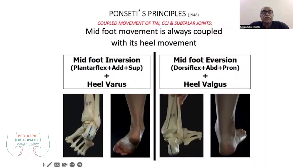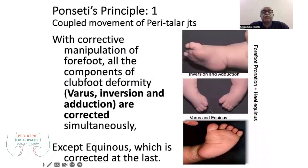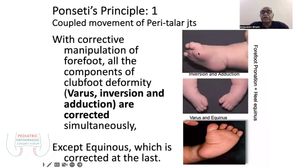From this normal position, you have to bring this deformity to correction by applying valgus forces and abduction. This is called coupled movement. When you implement the first principle of coupled movement of the peritalar joint with correction and manipulation of the forefoot, all components of the clubfoot deformity — varus, inversion, and adduction — get corrected.